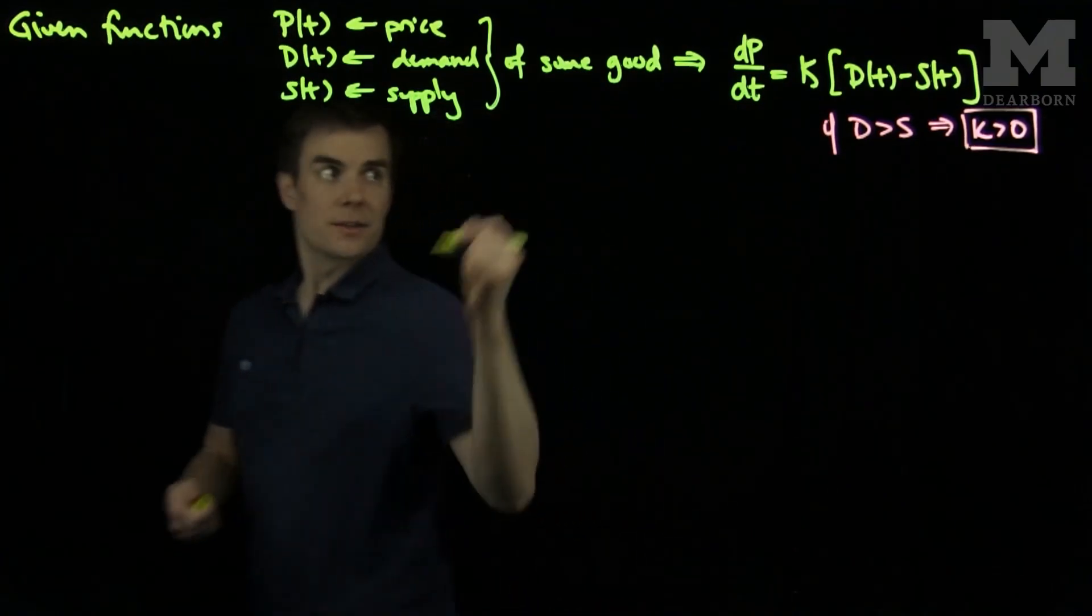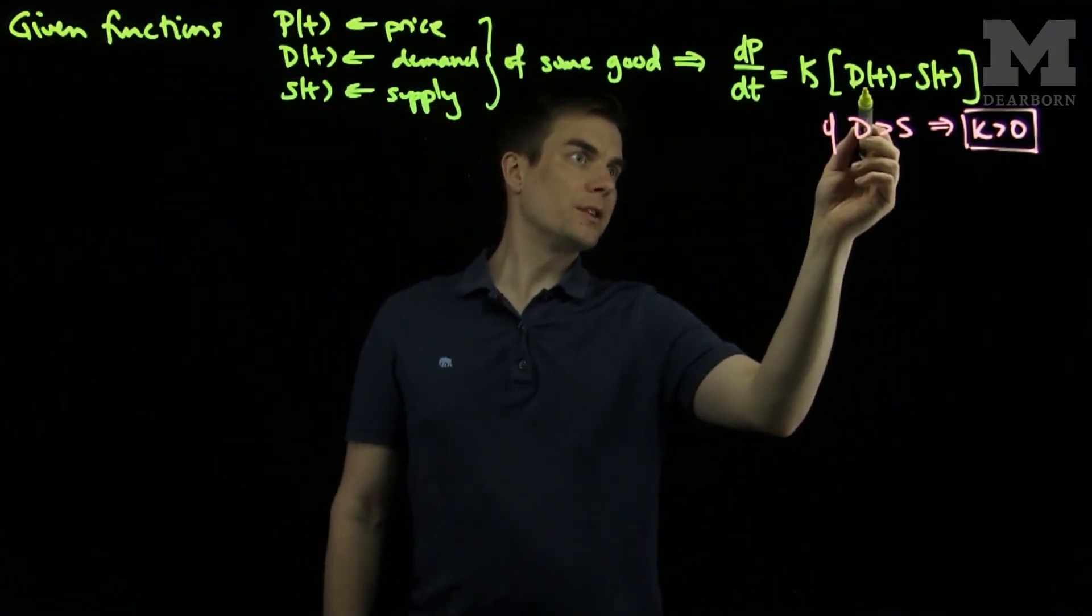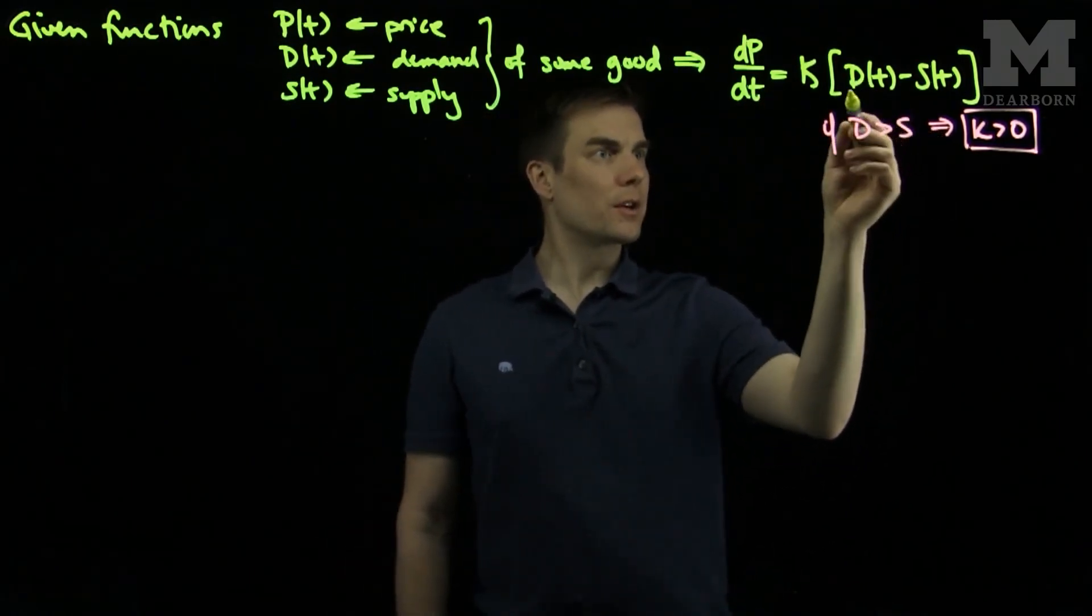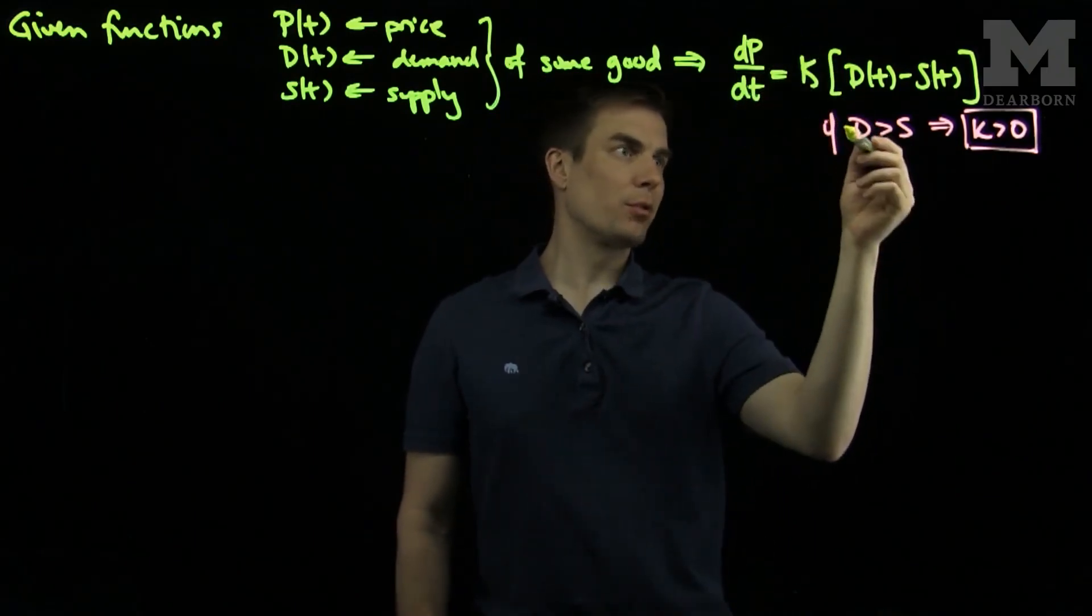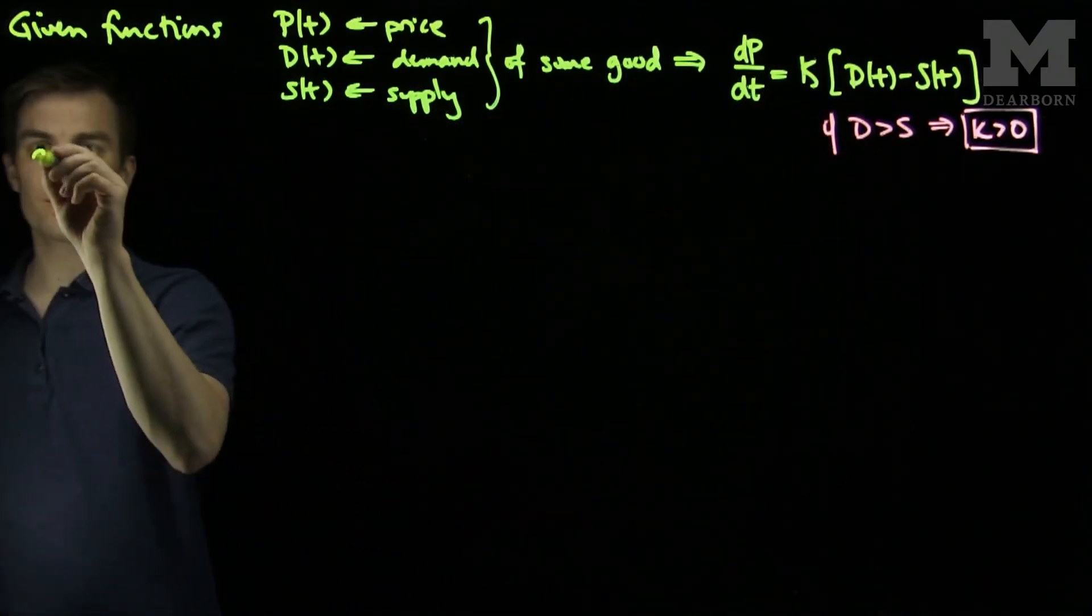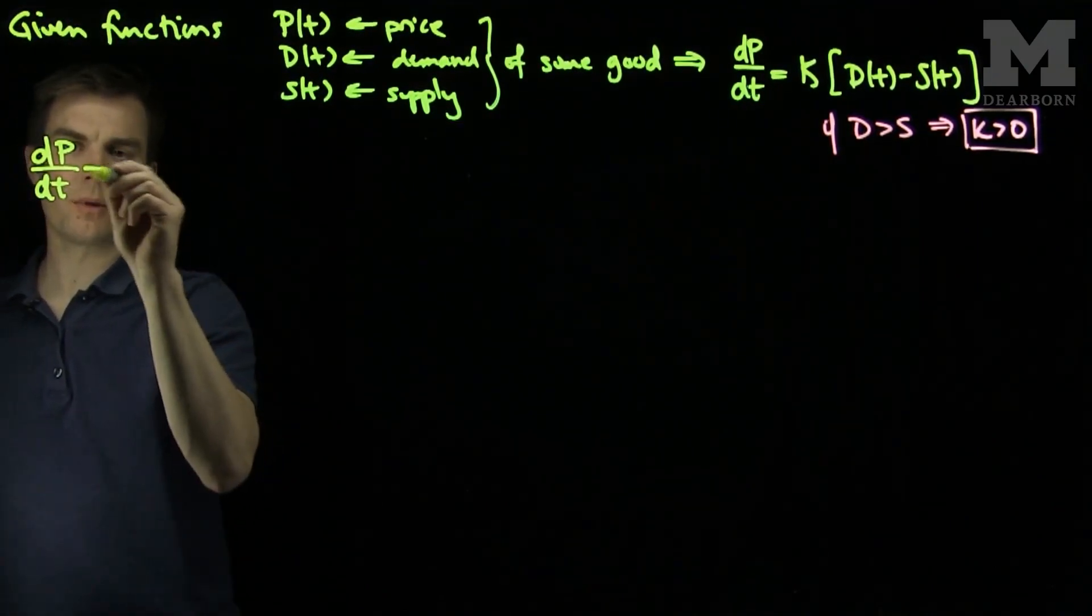So a simplified version of this model, for general functions D(t) and S(t), we will have to note that these are not only functions of time, but they're functions of price. So I can note that this can be rewritten in the following form, dP/dt in an equivalent form, since P is a function of t and t is a function of P.